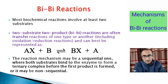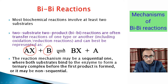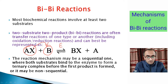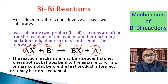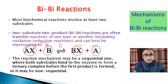One example of such a reaction could be where one substrate is AX and another substrate is B. The X group from A is transferred to B in the presence of some enzyme E, and the products formed are BX and A. These bi-bi reactions, depending on the order of substrate binding and order of products being released from the enzyme, could be of two types: sequential reactions and non-sequential ones.